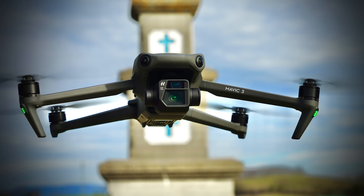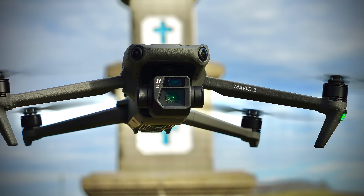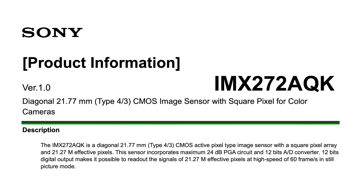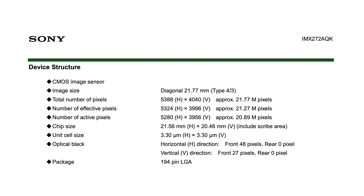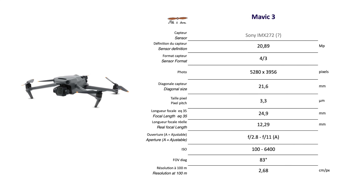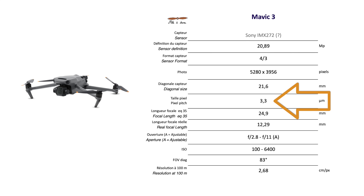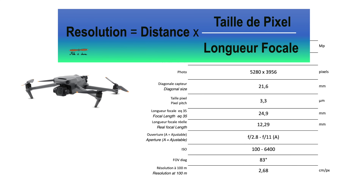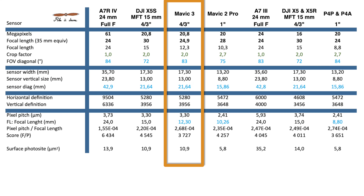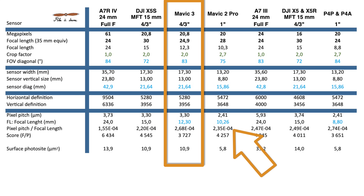Les spécifications techniques du capteur qui nous intéressent en photogrammétrie sont principalement la bonne définition des photos qui atteint 20,8 mégapixels, la focale réelle de 12,3 millimètres et la taille de photosite de 3,3 micromètres. Il en résulte une résolution de 2,68 centimètres par pixel à 100 mètres, soit légèrement meilleure qu'un Phantom 4 Pro à 2,74 et un peu moins bonne que les 2,35 centimètres par pixel du Mavic 2 Pro.